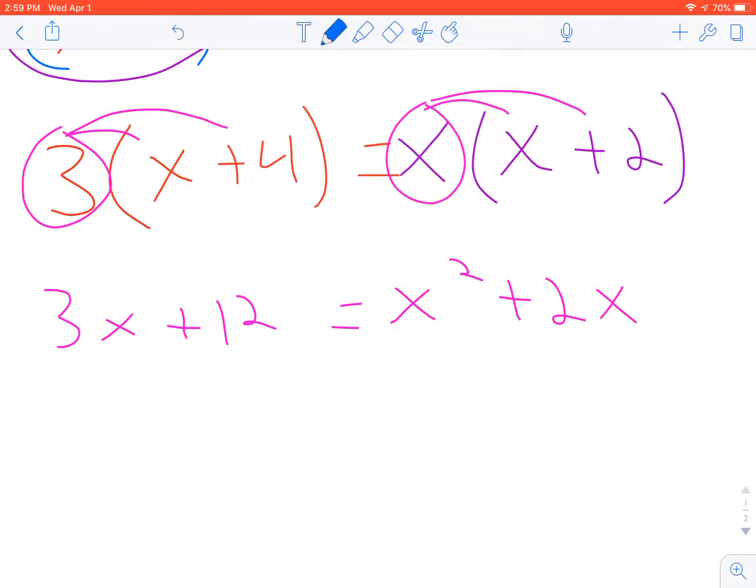What I want to do is I want to get all of my terms on one side of the equation, and I'm always going to make a decision based on my x squared, always staying positive or making it positive so that I can do that. So in this case I'm going to leave the x squared on the right, because if I move it to the other side it would become negative and that just makes it more difficult to factor.